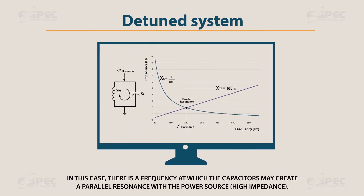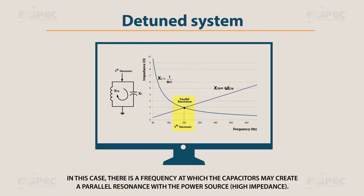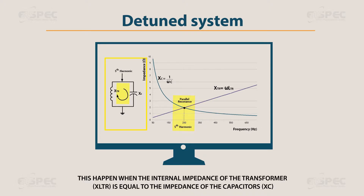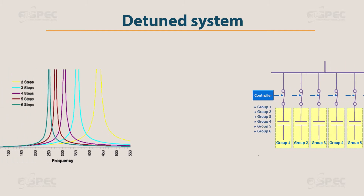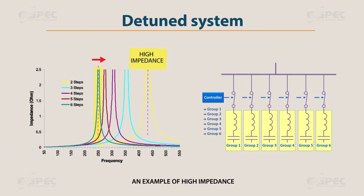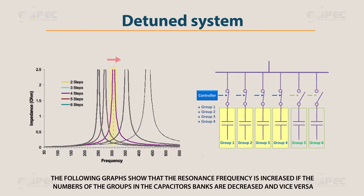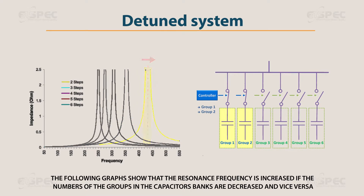In this case, there is a frequency at which the capacitors may create a parallel resonance with the power source — high impedance. This happens when the internal impedance of the transformer (XLTR) is equal to the impedance of the capacitors (XC). The parallel resonance creates very high impedance at the resonance frequency. The graph shows that the resonance frequency increases if the number of groups in the capacitor banks is decreased, and vice versa.